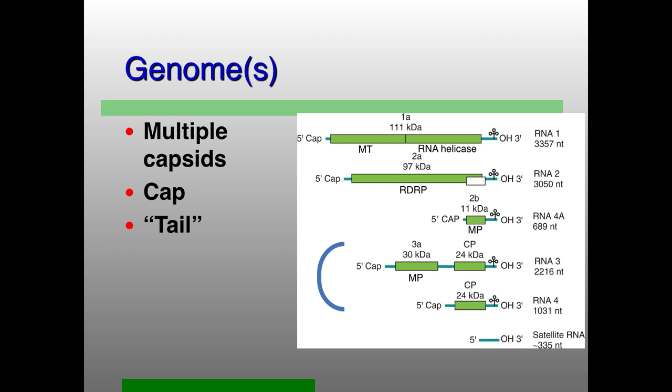You get multiple capsids with multiple genomes, and you do need these multiple genomes in order to be able to replicate. These viruses have an RNA-dependent RNA polymerase — this is what you have to have for all RNA viruses. These are positive strand, so you just need the coding sequence for the RNA-dependent RNA polymerase. You also have a capsid protein. In theory those are the only two things you need.